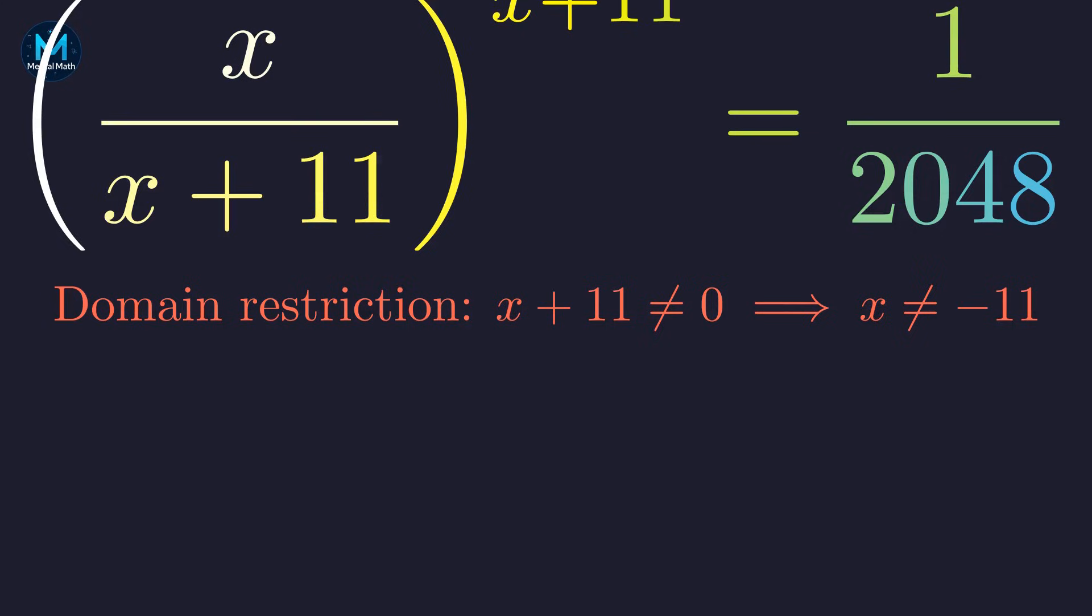First, a quick note. The denominator can't be zero, which means x can't equal negative 11. We'll keep that in mind.